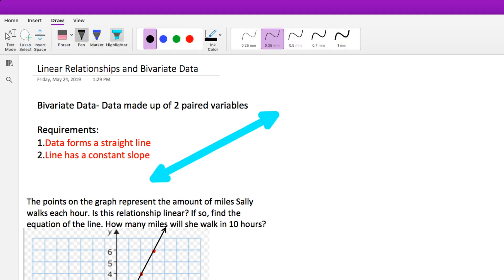However, could this be considered bivariate data? No, because there is no way you can consider that a straight line at all. And then the second requirement is line has a constant slope. We know that every completely straight line has a constant slope. So, we're good in that department.